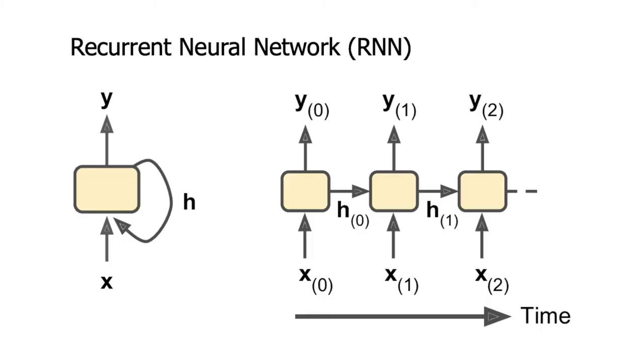But as I said, this is a simple neural network — we have different kinds of architecture. For example, a recurrent neural network is used for sequence data. And what is sequence data?